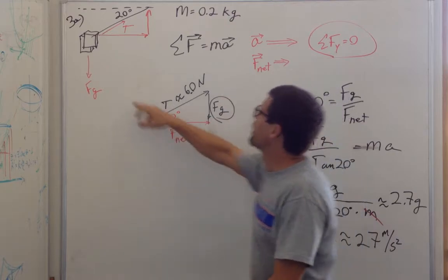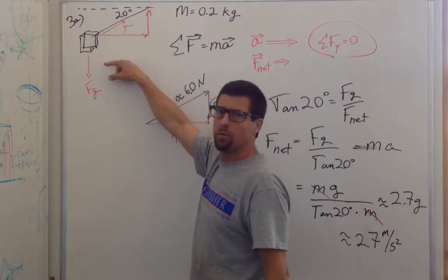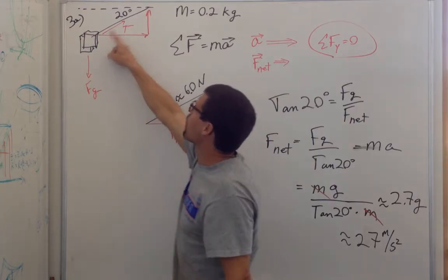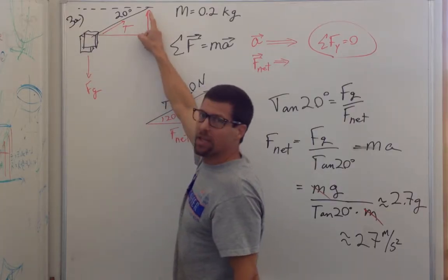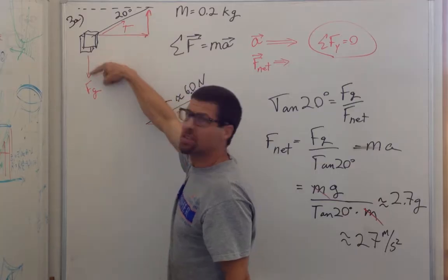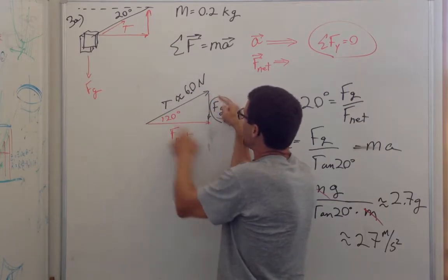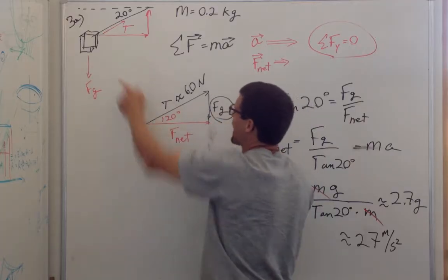And so we go in and we draw the two forces, and one of the things that's important to note is that the force on a rope is always in the same direction as the rope itself. If this is the free body diagram, then the tension and the force of gravity make that same angle.